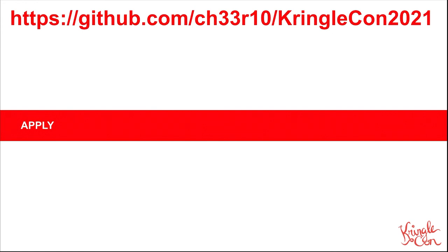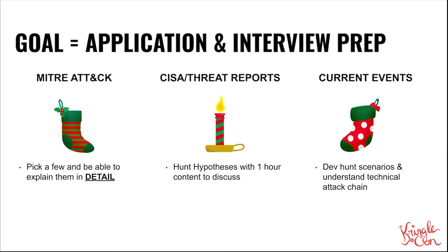So finally — apply. The goal with application is to prepare you for the interview, and so that once you are hired in a threat hunting role, you can provide value immediately right out of the gate. The first thing I suggested to Al is to look at MITRE ATT&CK and to pick a few different techniques and procedures and really understand them and be able to speak to them in detail. The next one is CISA public threat reports — you want to develop enough hunt hypotheses per threat report for approximately an hour's worth of content, so that when you're in an interview, you'll have an hour of content to pick through and highlight the big takeaways.